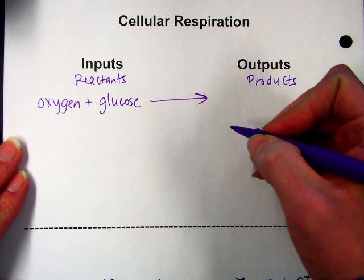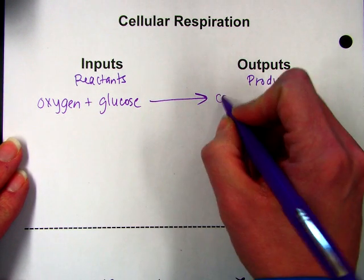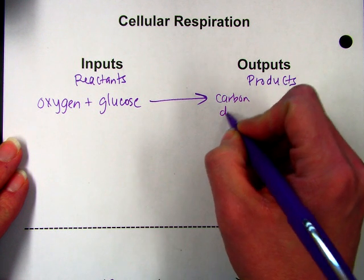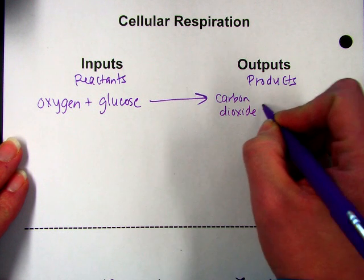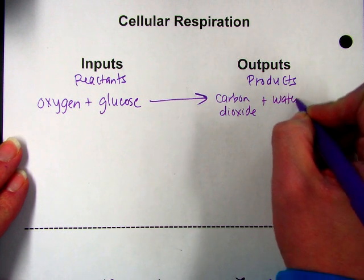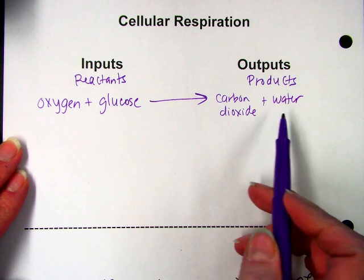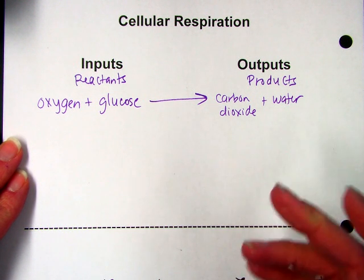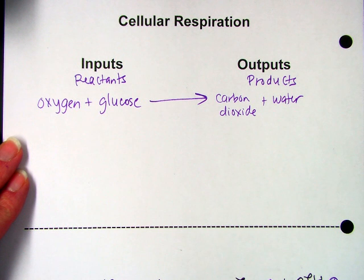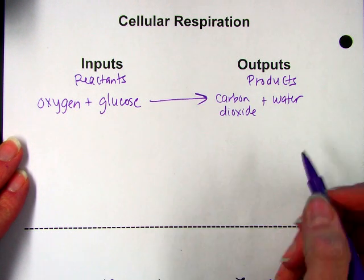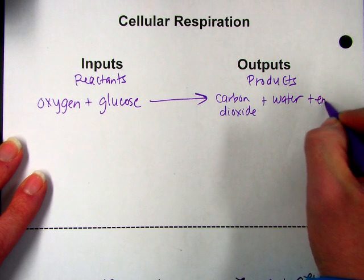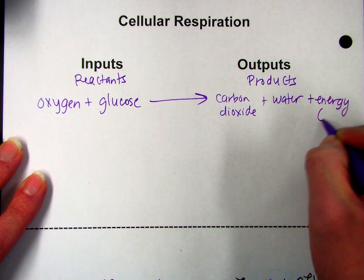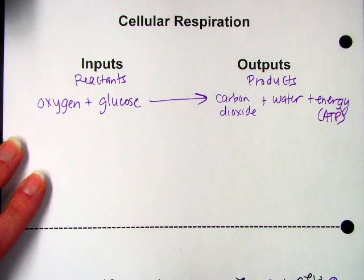And we produce three things: carbon dioxide, a little bit of water that's usually given off as water vapor—this is why when you take a mirror and breathe on it, it leaves a film—and then we also make energy in the form of an energy currency molecule called ATP.